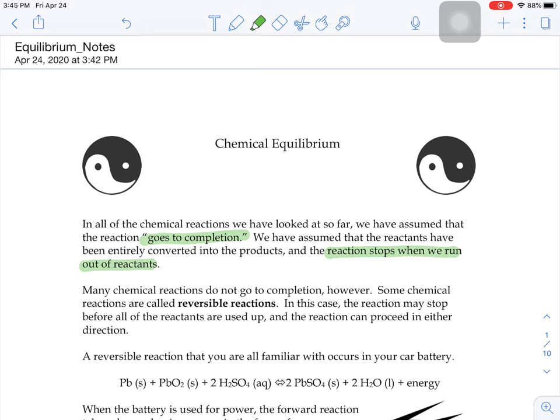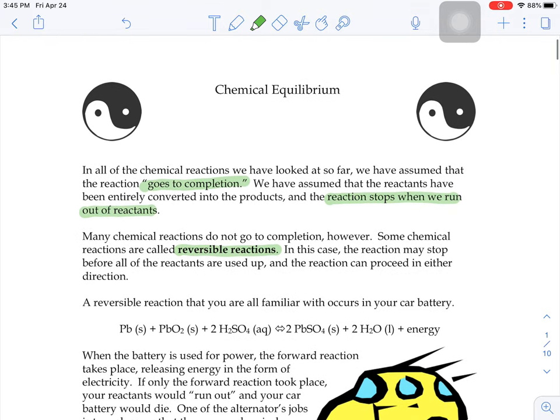But there's a whole other set of reactions out there that don't go to completion. They're called reversible reactions because, like it sounds, you might get the reaction to go in the forward direction, or it could turn around and your products can turn back into reactants. So the reaction may stop before all the reactants get used up because they never get all used up.